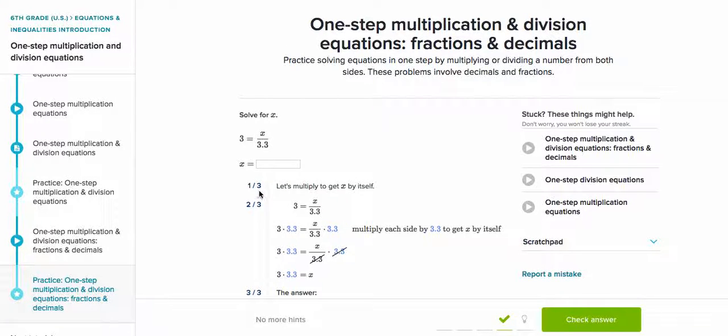So the first step is let's multiply both sides by the denominator. So basically, we're going to take 3.3, we're going to multiply it by 3, and we're going to multiply it by the denominator, 3.3.